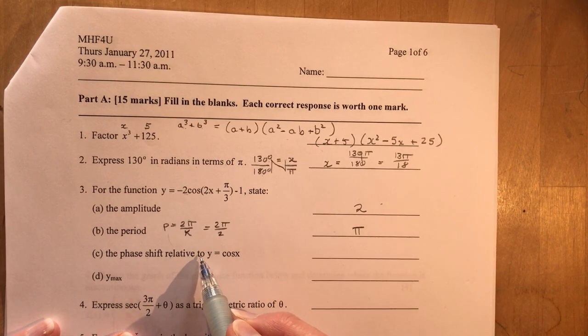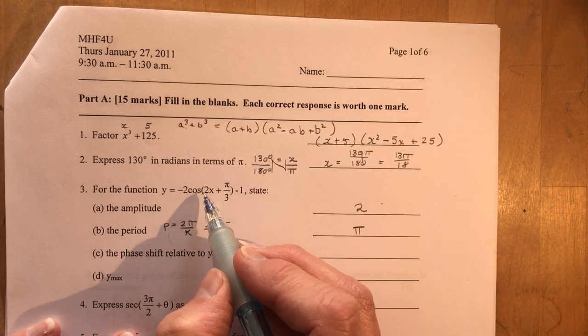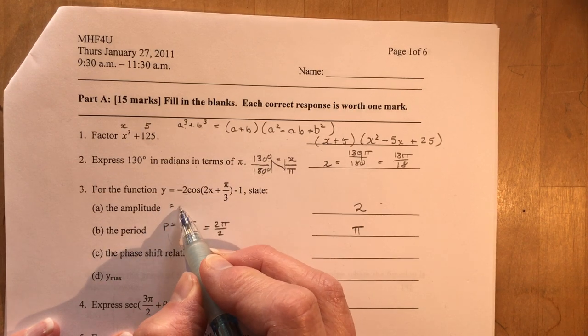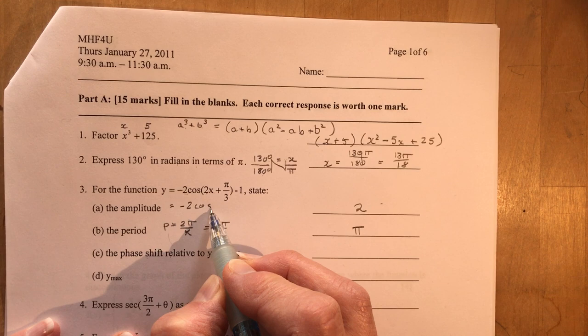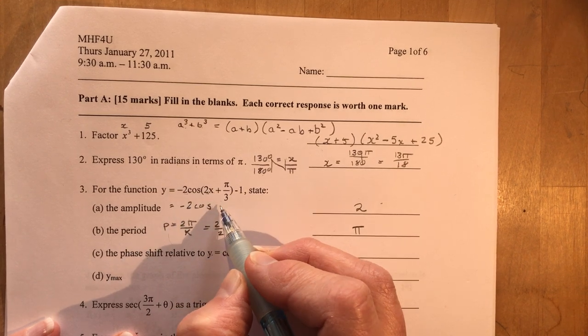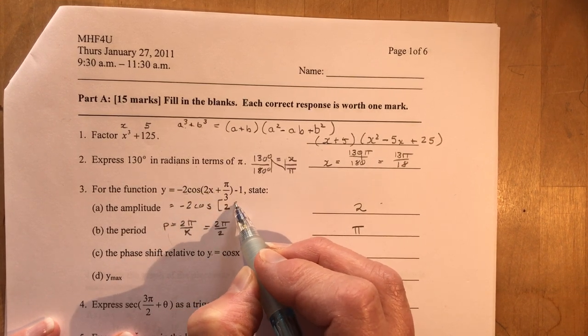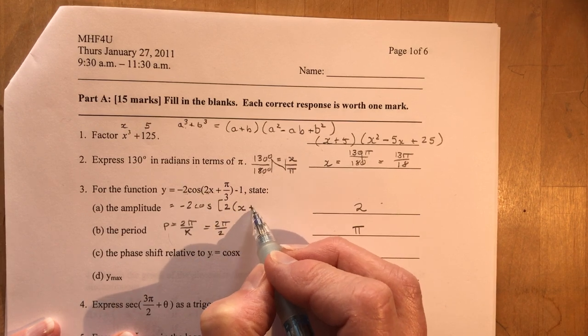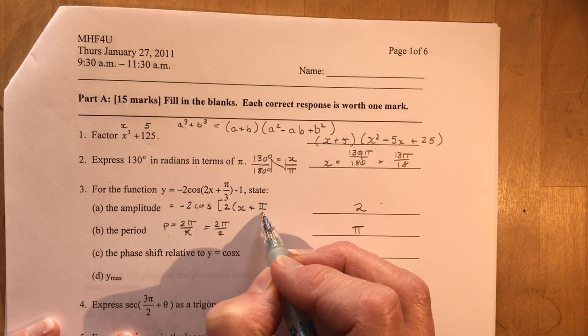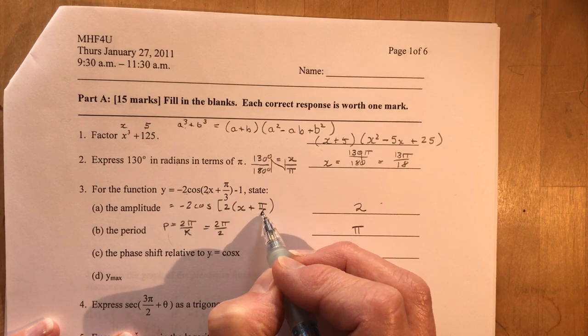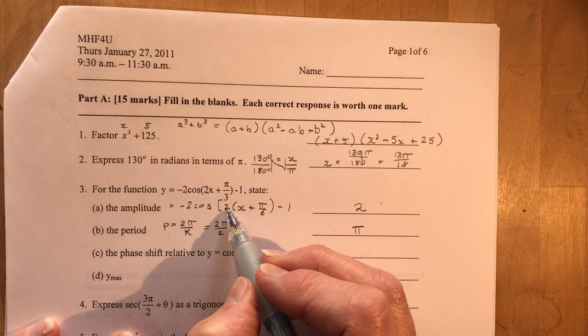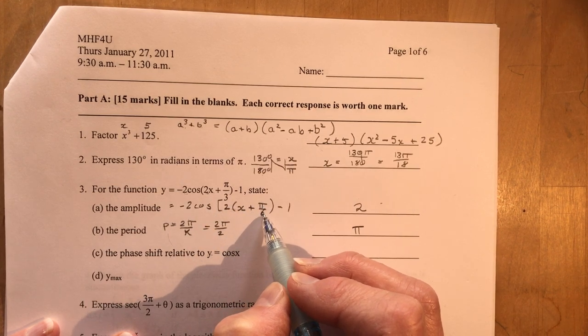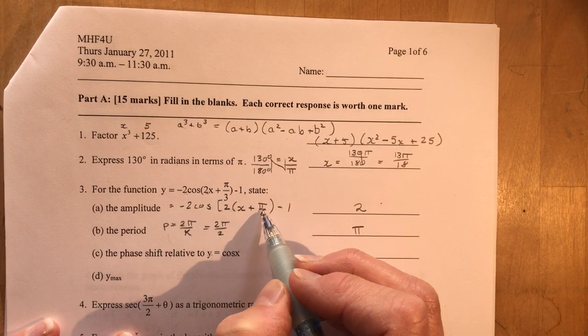What is the phase shift relative to y equals cos x? So the phase shift, remember, oh look, the teacher's trying to fool you again. That was me. You have to factor out the coefficient of x. Don't forget that. You probably got nailed on that in grade 11. Don't let it happen in grade 12. So this becomes pi over 6. Make sure you divide it properly. Minus 1. So you always double check to expand. So 2 times pi over 6 would be 2 pi over 6, which is pi over 3.